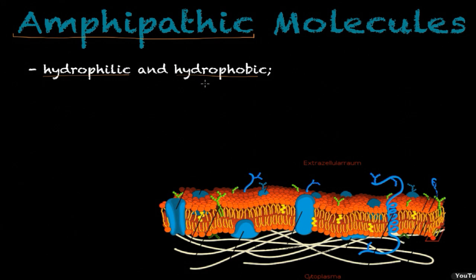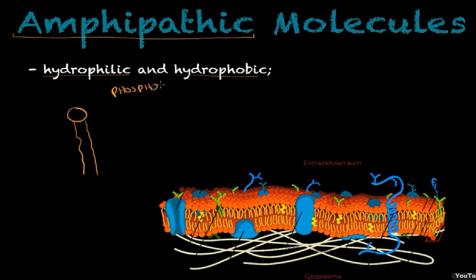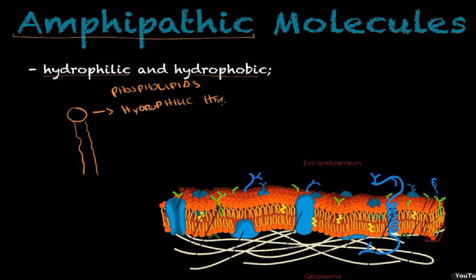A great example of this type of molecule is one you find on your cell's membranes. These are called phospholipids. These molecules have a hydrophilic head and a hydrophobic tail.